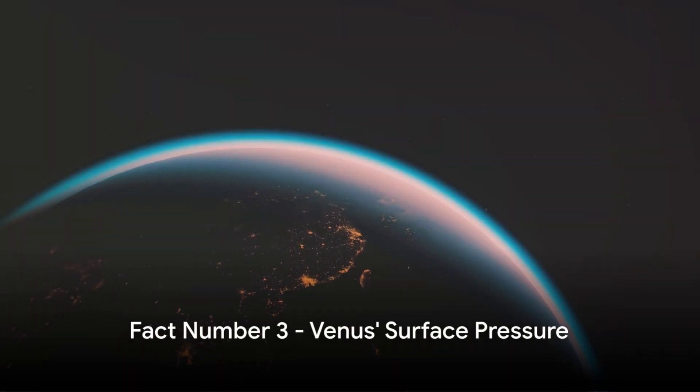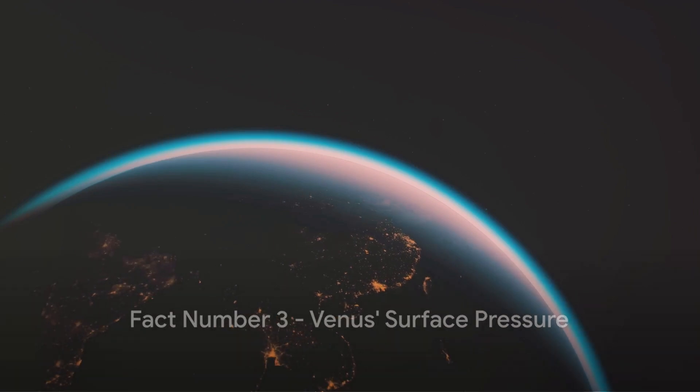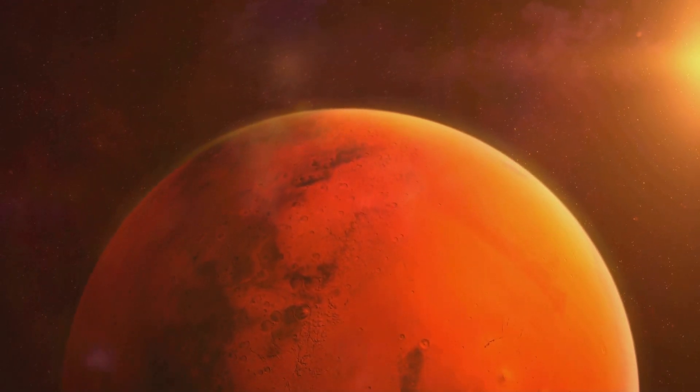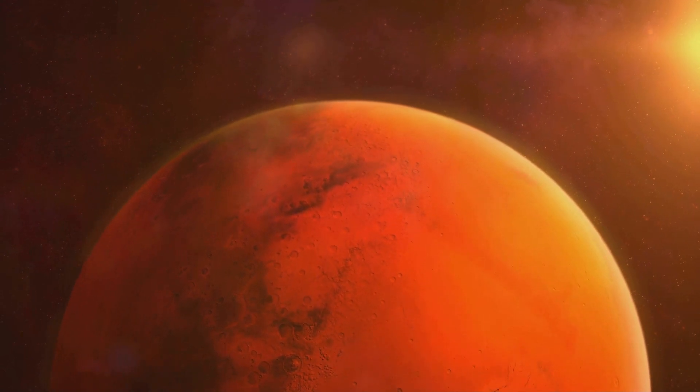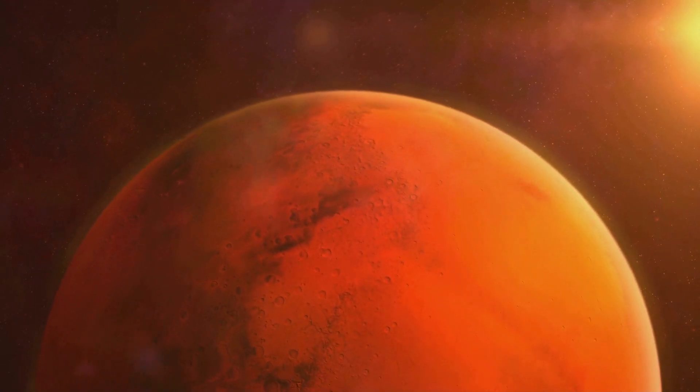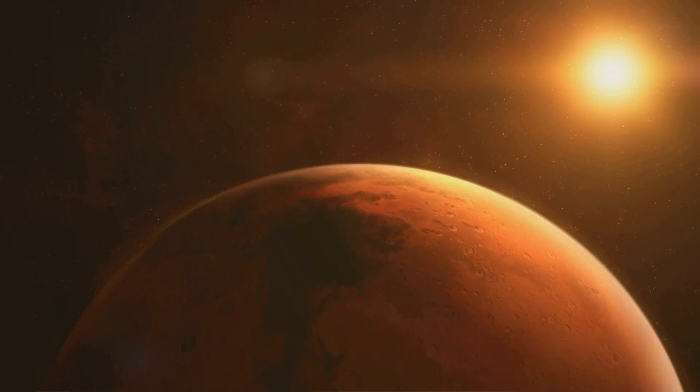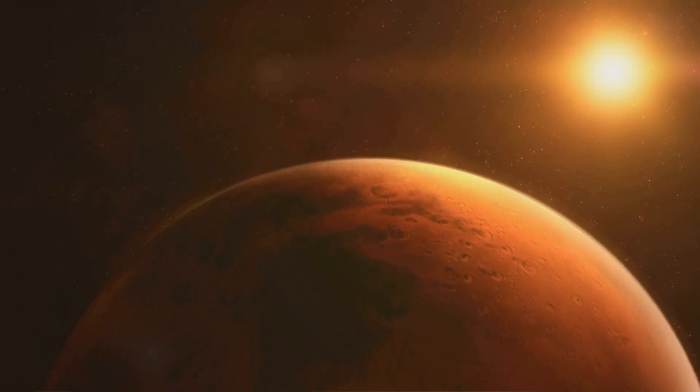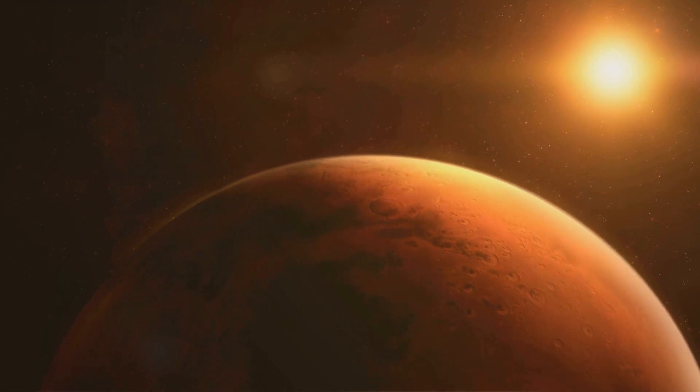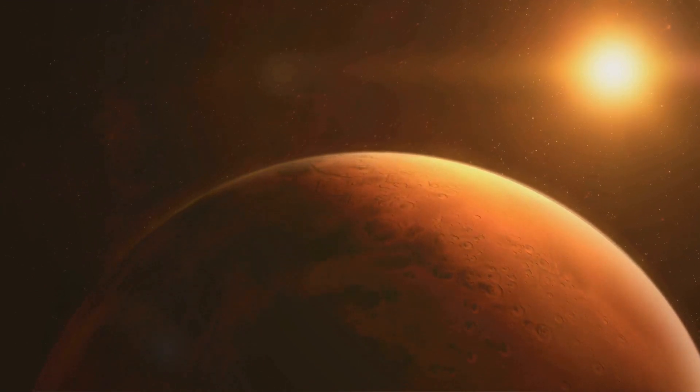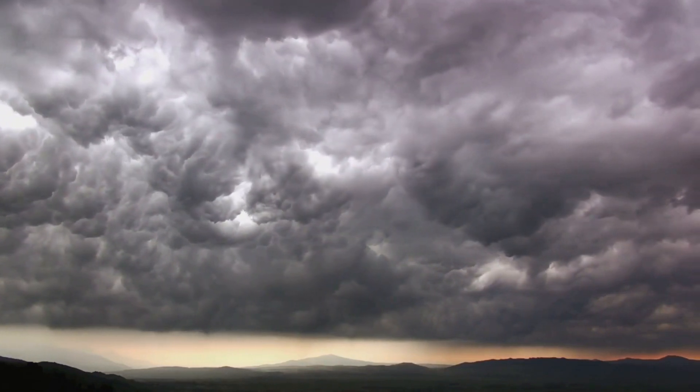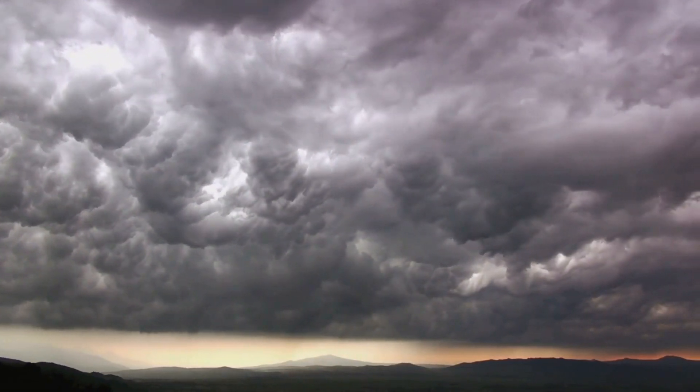Down to fact number 3. The surface pressure on Venus is extreme. Imagine diving deep into the ocean. The further you descend, the greater the pressure becomes. It's a similar situation on Venus, only much, much more intense. The surface pressure on this fiery planet is 92 times greater than on Earth. That's comparable to being 1 kilometer below the surface of our oceans. Now, why is the pressure so high? Well, Venus has a thick, dense atmosphere made mostly of carbon dioxide, with clouds of sulfuric acid.